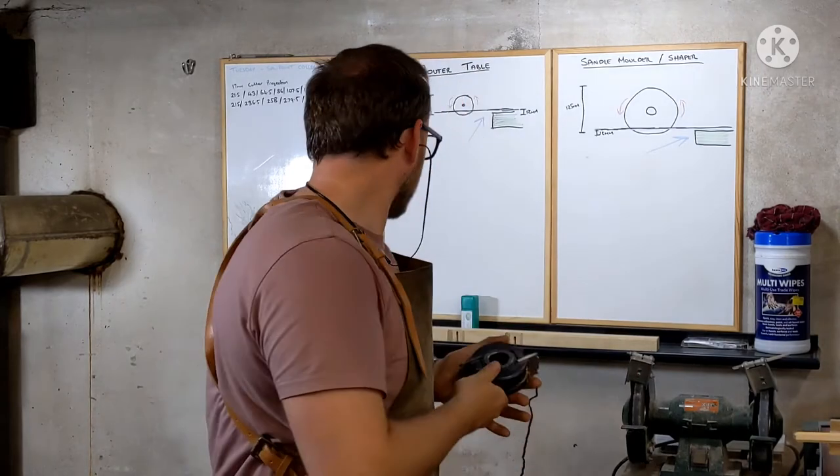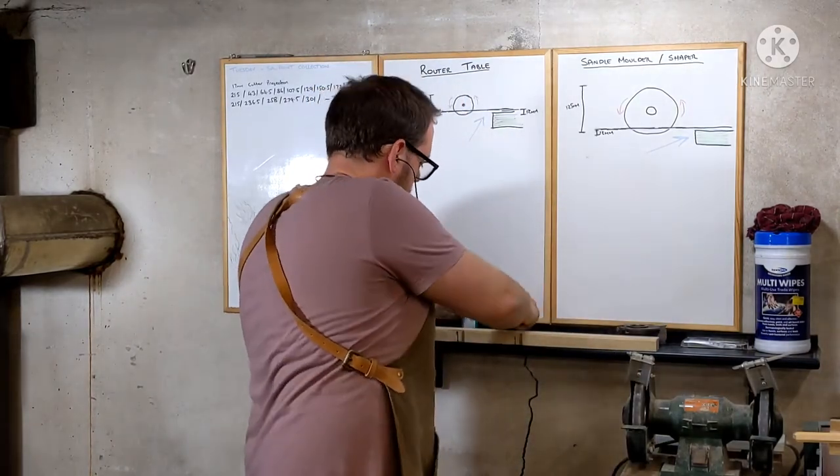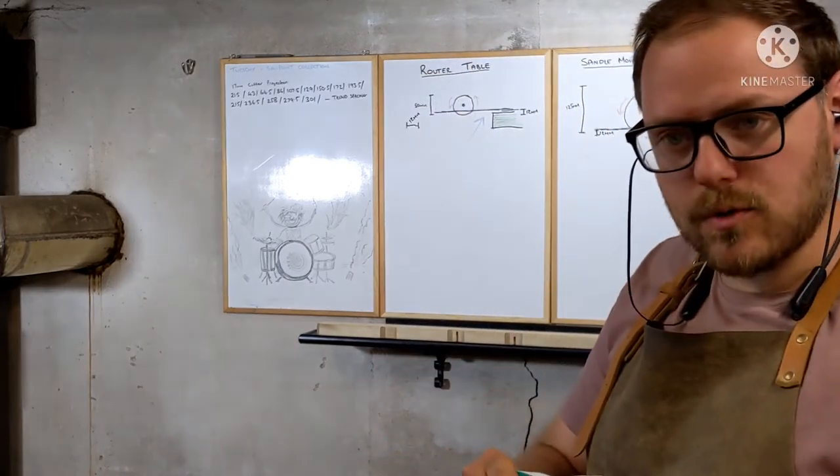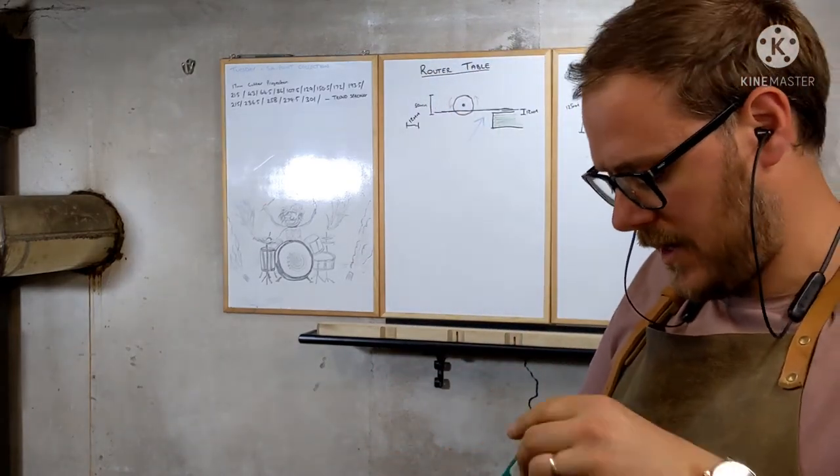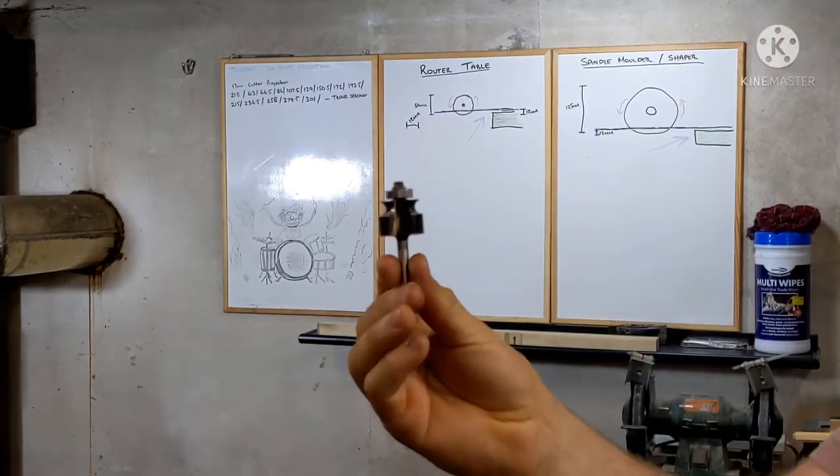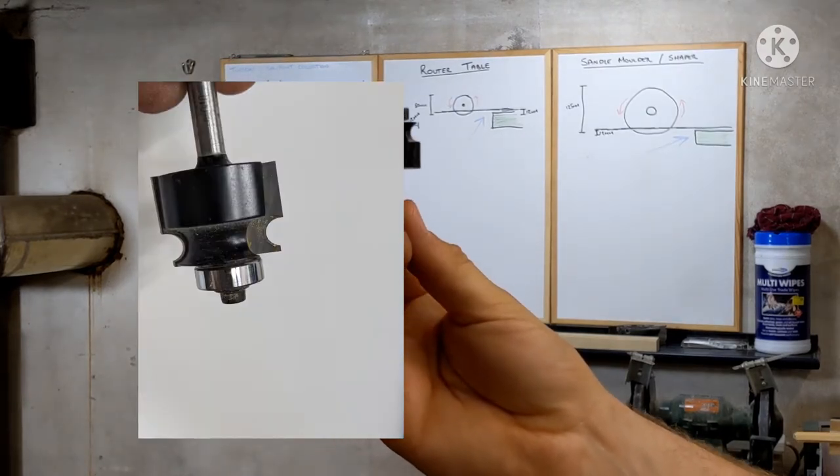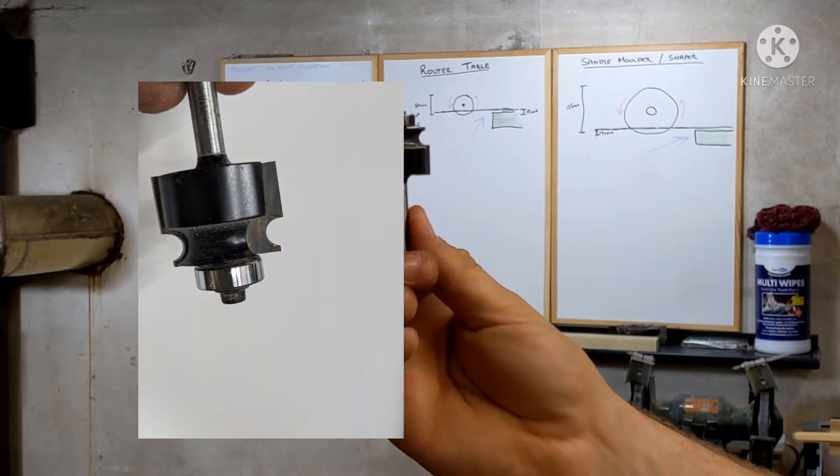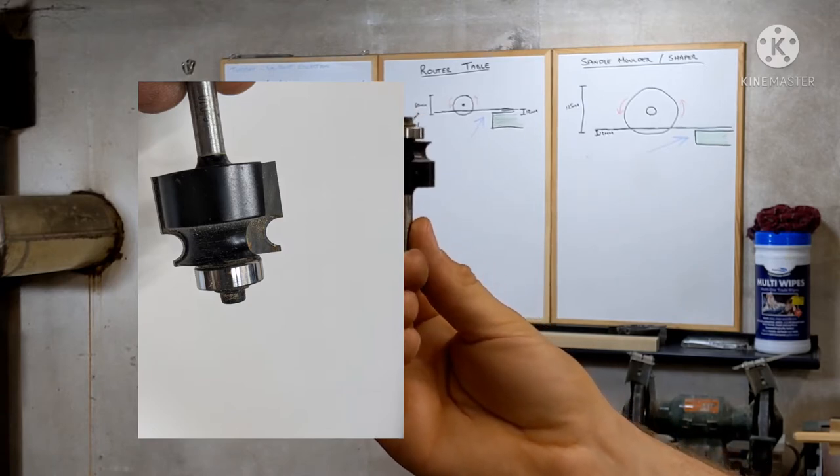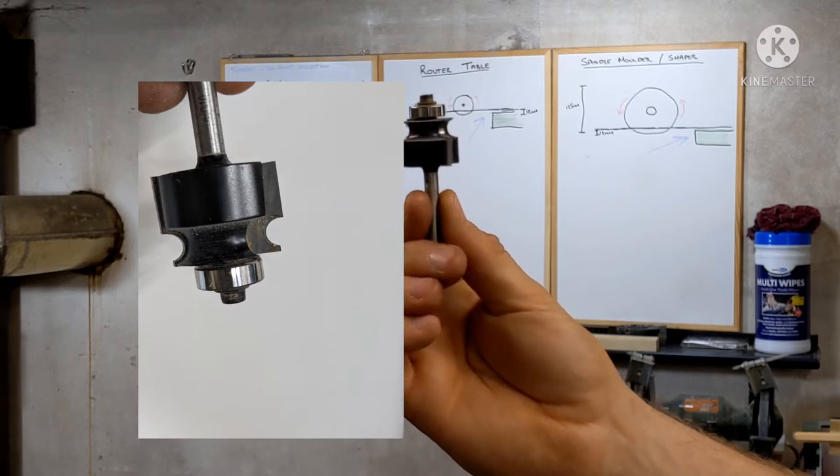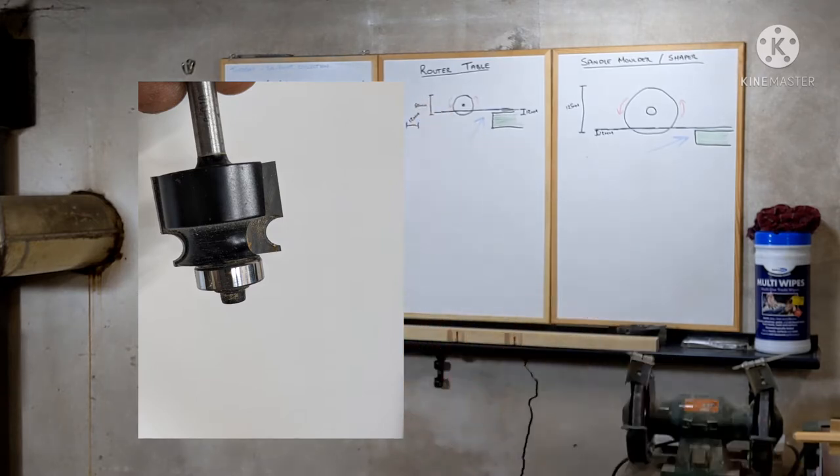That there is about five inches across. And then we also have here a router cutter made by a company in the UK called Wealden who do some really good product cutters. This is the exact same profile again. Either one of these would be suitable for cutting that exact same shape. You're going to get the same profile at the end - two means of doing the same thing.